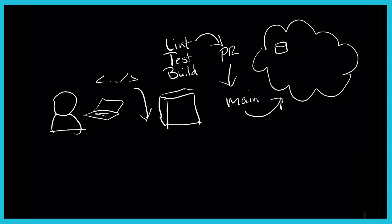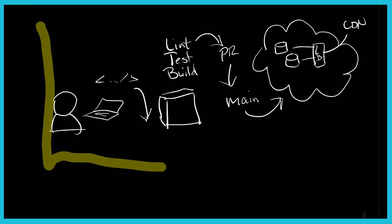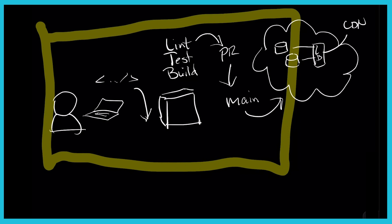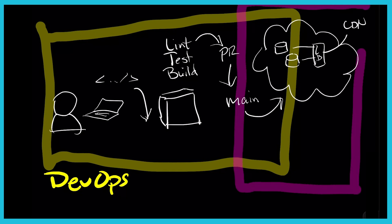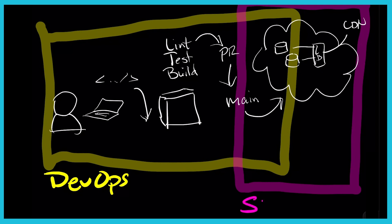When that deployment happens, we run multiple instances of the code for high availability and redundancy — sitting behind a load balancer — and we might also have a CDN, or content delivery network, in front of that as well. The section highlighted in yellow is typically the DevOps environment, and the section drawn in pink is typically the responsibility of SRE, with some overlapping area around where we actually deploy code to production.